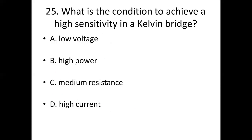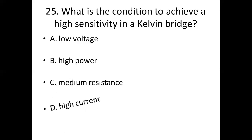25th bit. What is the condition to achieve a high sensitivity in Kelvin bridge? Option A: low voltage. Option B: high power. Option C: medium resistance. Option D: high current. Answer: Option D, high current.